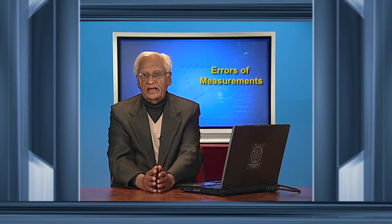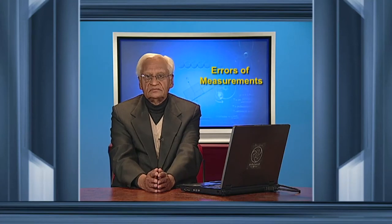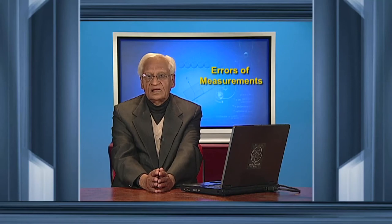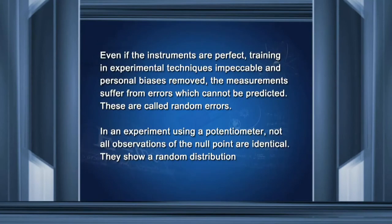Even if the instruments are perfect, training in experimental techniques is perfect, and personal biases are removed completely, the measurements can still suffer from errors. These errors cannot be predicted — these are random errors. For example, in an experiment using a potentiometer, not all observations of the null point are identical; they show a random distribution, sometimes shifting to one side, sometimes to the other.